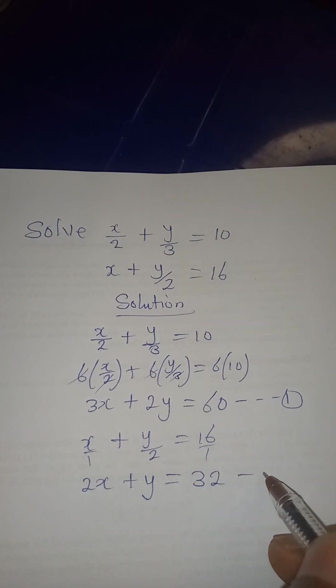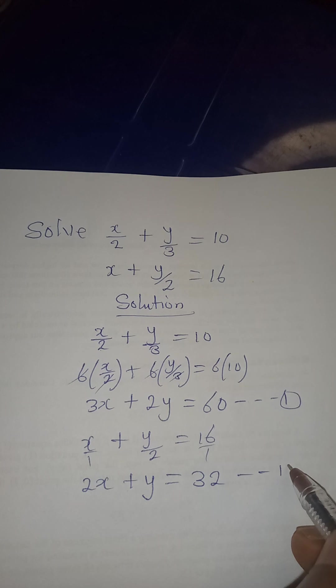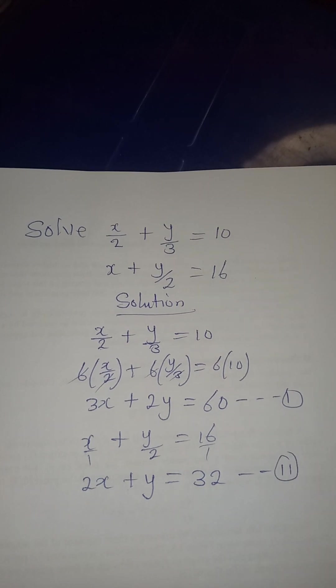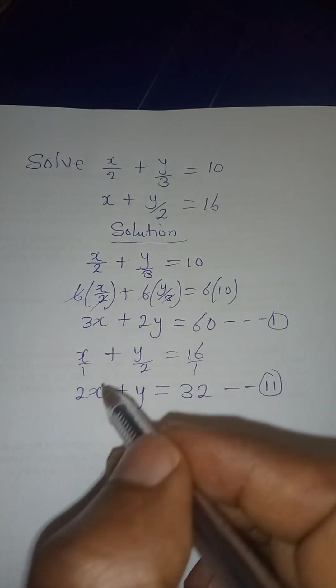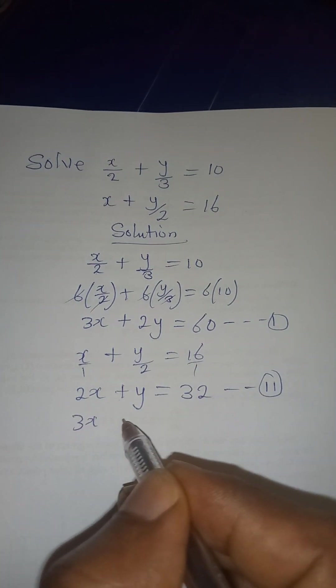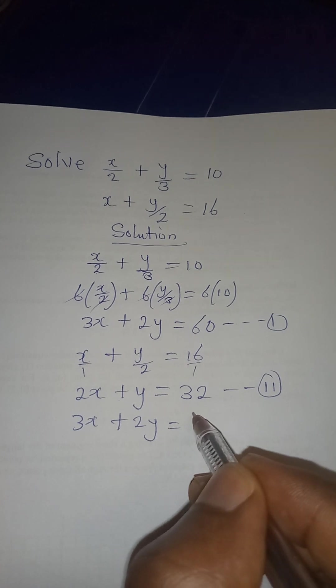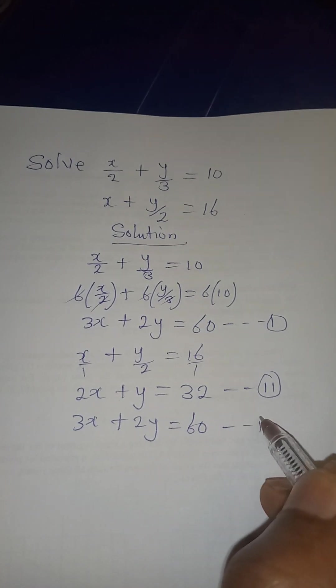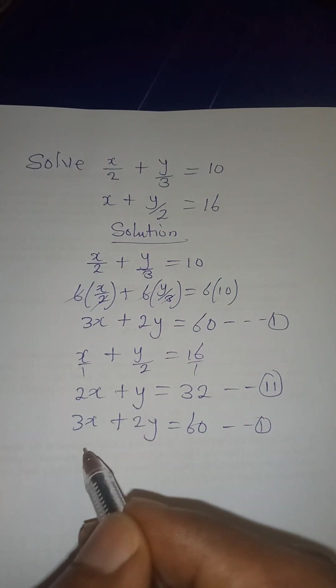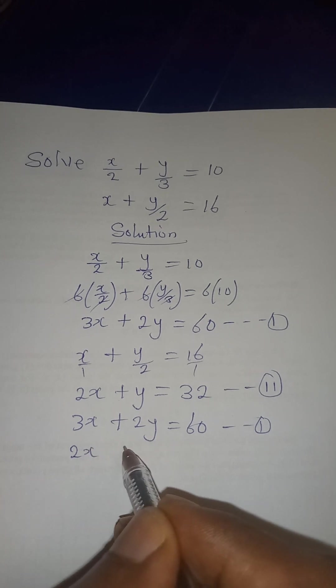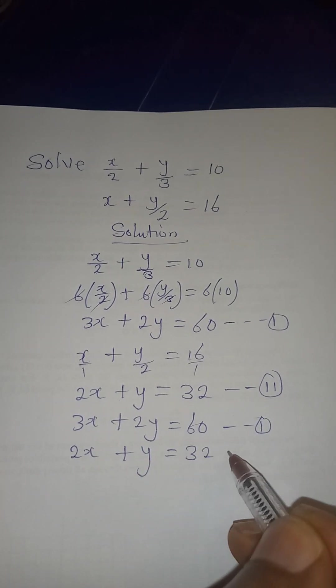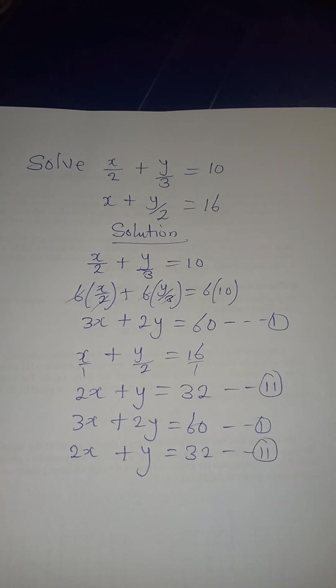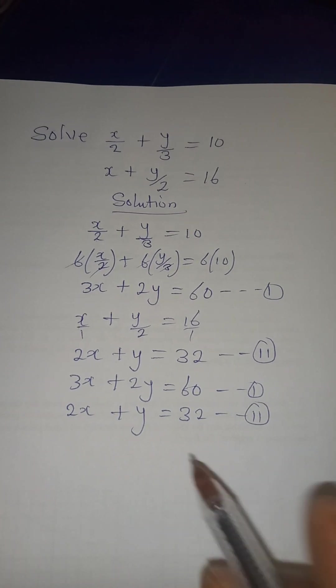And that is 32. So this is now our equation 2. Now let's bring equation 1 and 2 together. Equation 1 is 3x plus 2y equal to 60. This is our equation 1. And equation 2 is 2x plus y equal to 32. This is our equation 2.